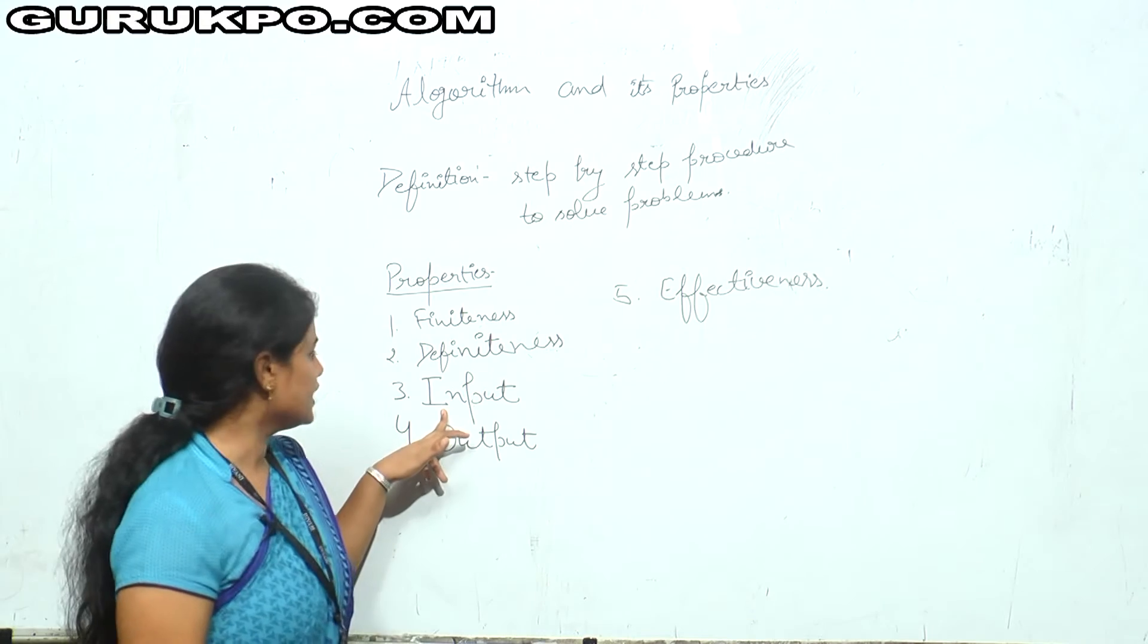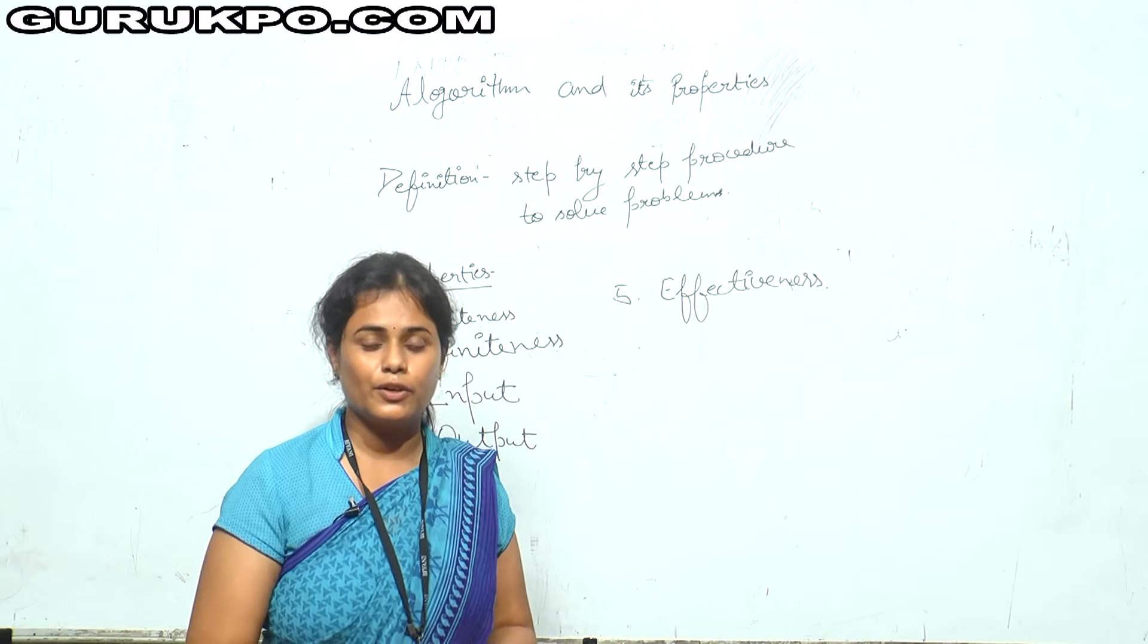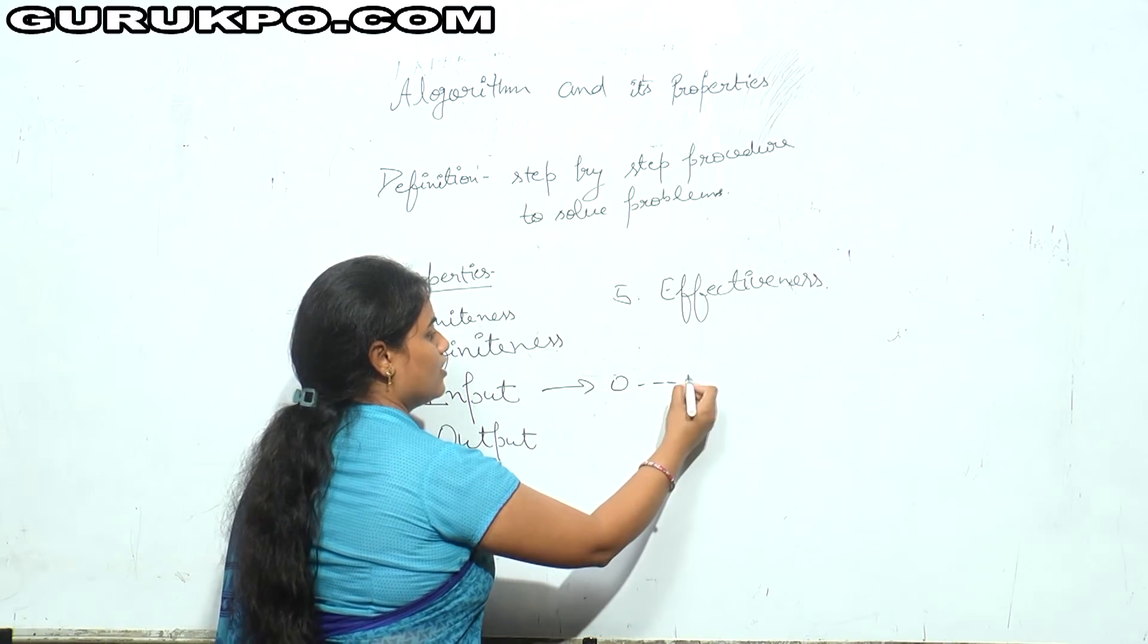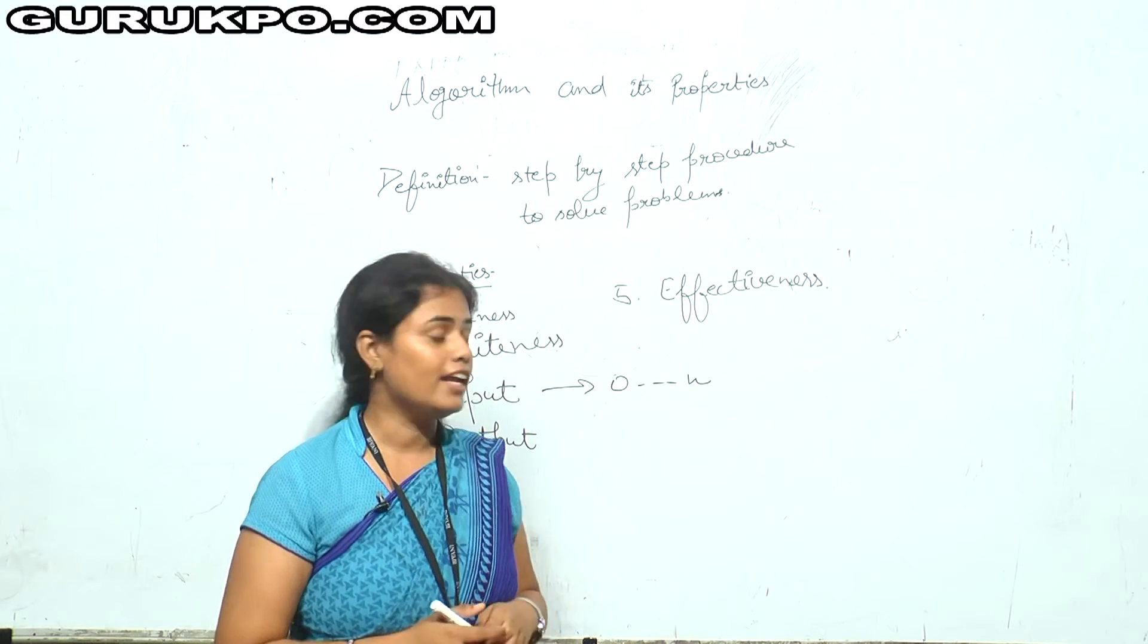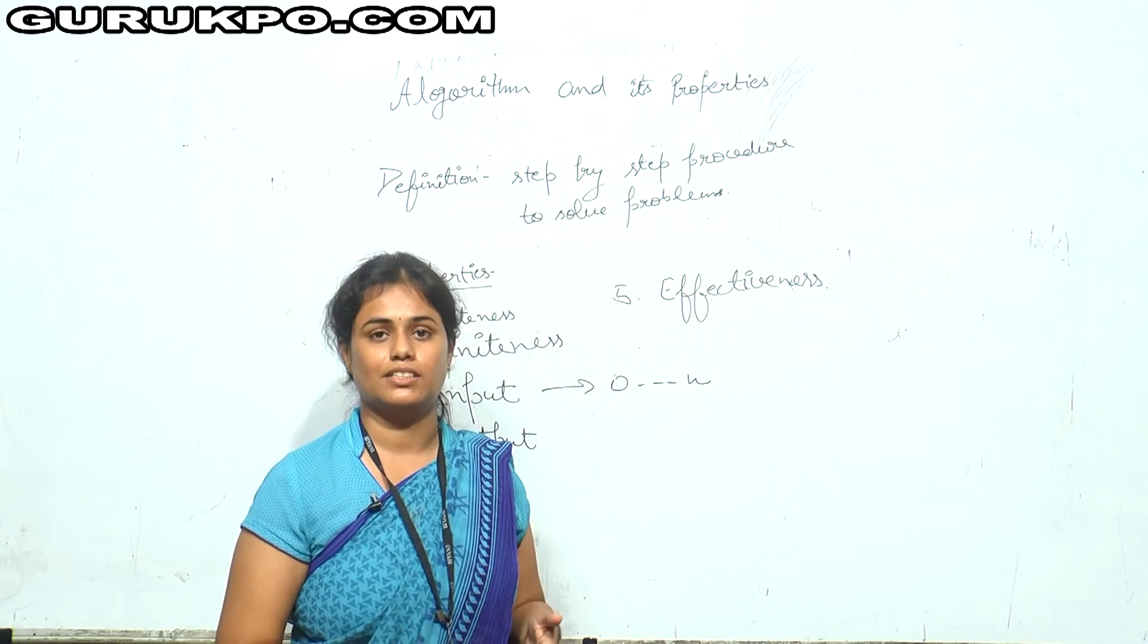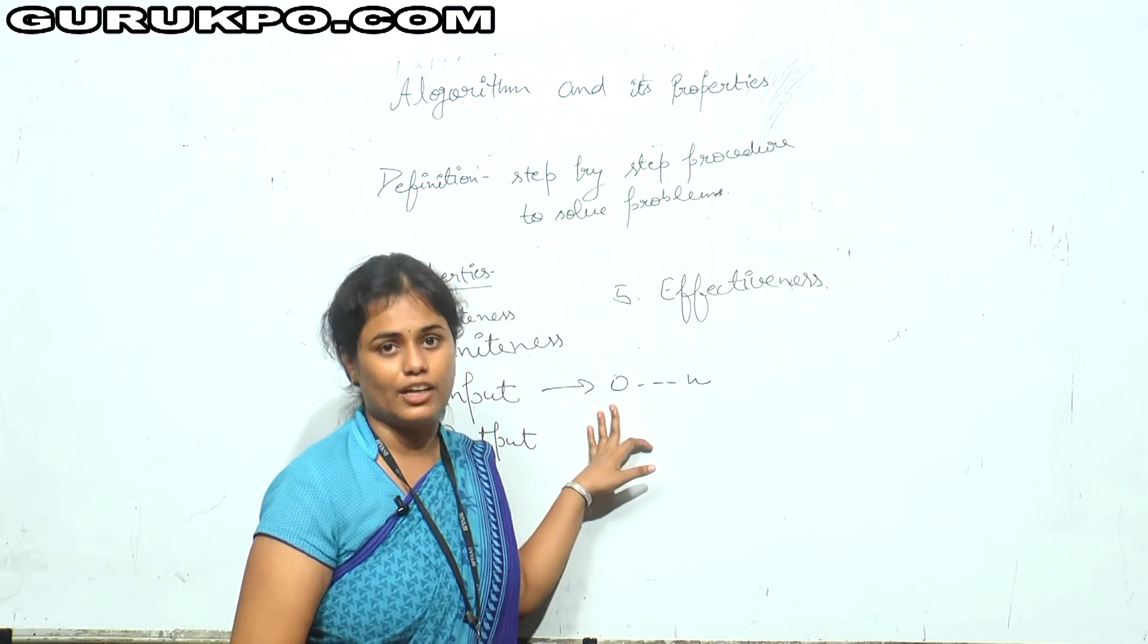Then third is input. Input is basically, we give the input to the algorithm. Input can be 0 to N. In some algorithms, there are no inputs. 0 means, suppose I ask my program to print 10 numbers. It will print the first 10 numbers, first 10 natural numbers. You don't need to give any input for this algorithm.